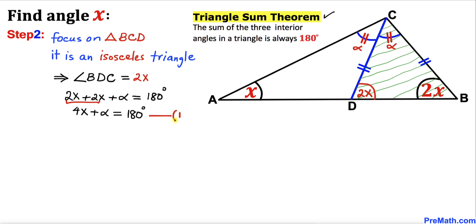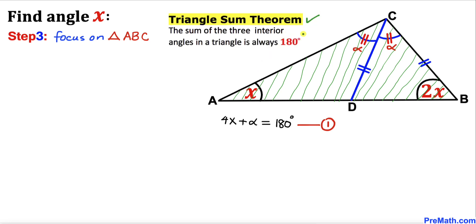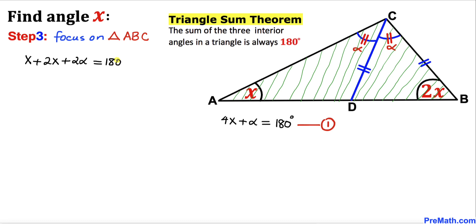Now let's focus on the big triangle ABC. By the angle sum theorem, angle x + angle 2x + angle 2alpha = 180 degrees. So we can write: x + 2x + 2alpha = 180 degrees. Let's call this Equation 2.